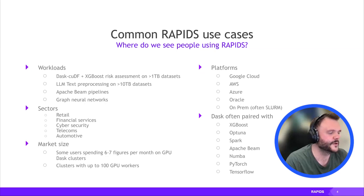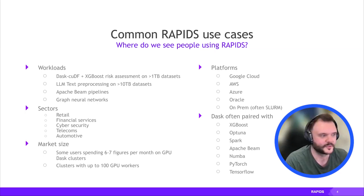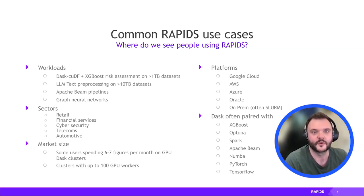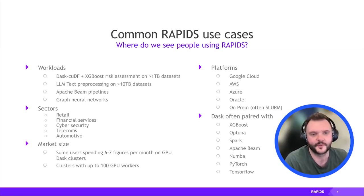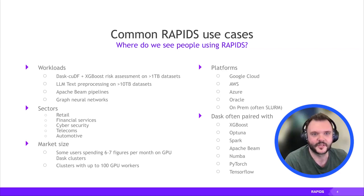We also see a lot of people using Apache Beam, and there's a group doing work with graph neural networks. These customers come from all sorts of sectors. Some are spending six or seven figures a month on GPUs in the cloud just to run Dask clusters and do cuDF workloads with XGBoost. Some clusters have 100 GPU workers. Others go on-prem, buying a bunch of NVIDIA machines and using SLURM to schedule them — it feels very academic HPC.